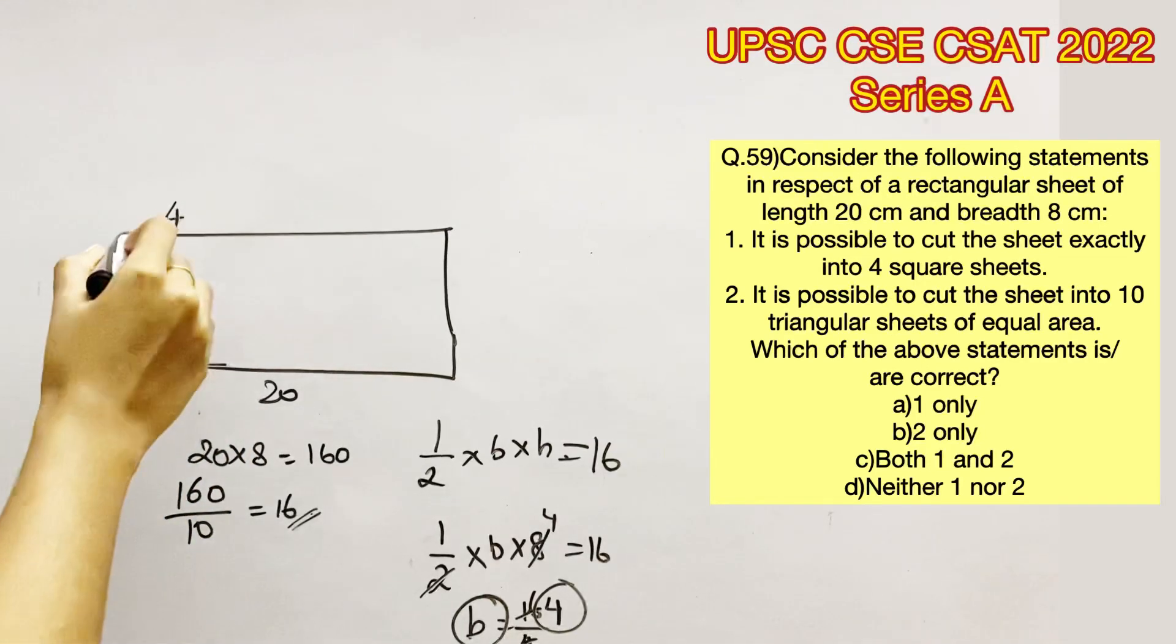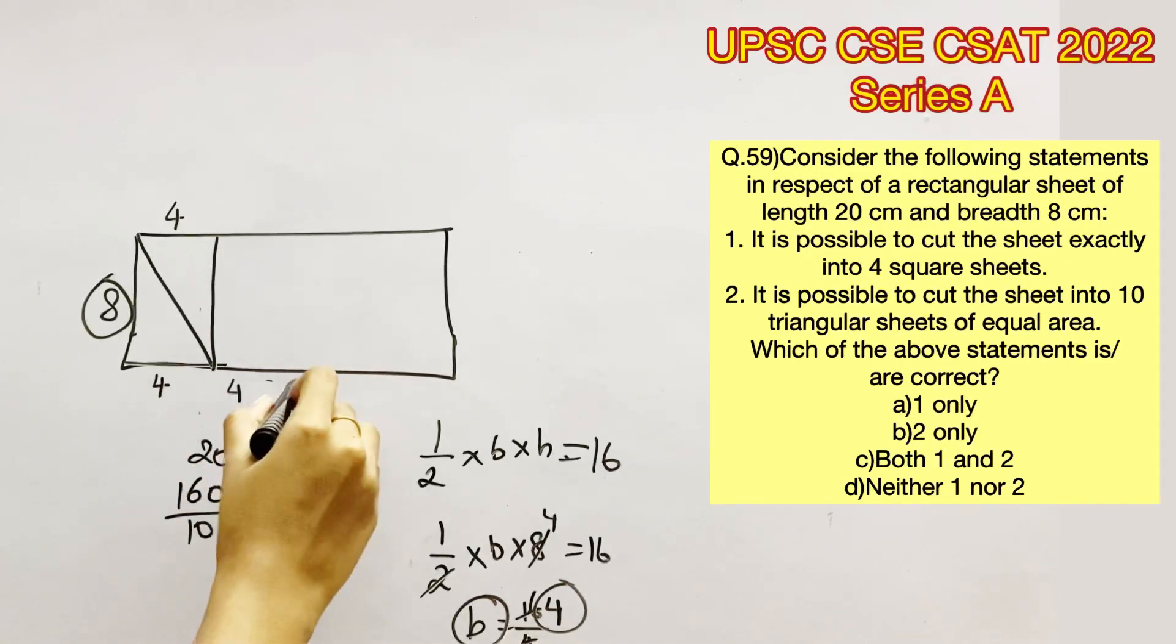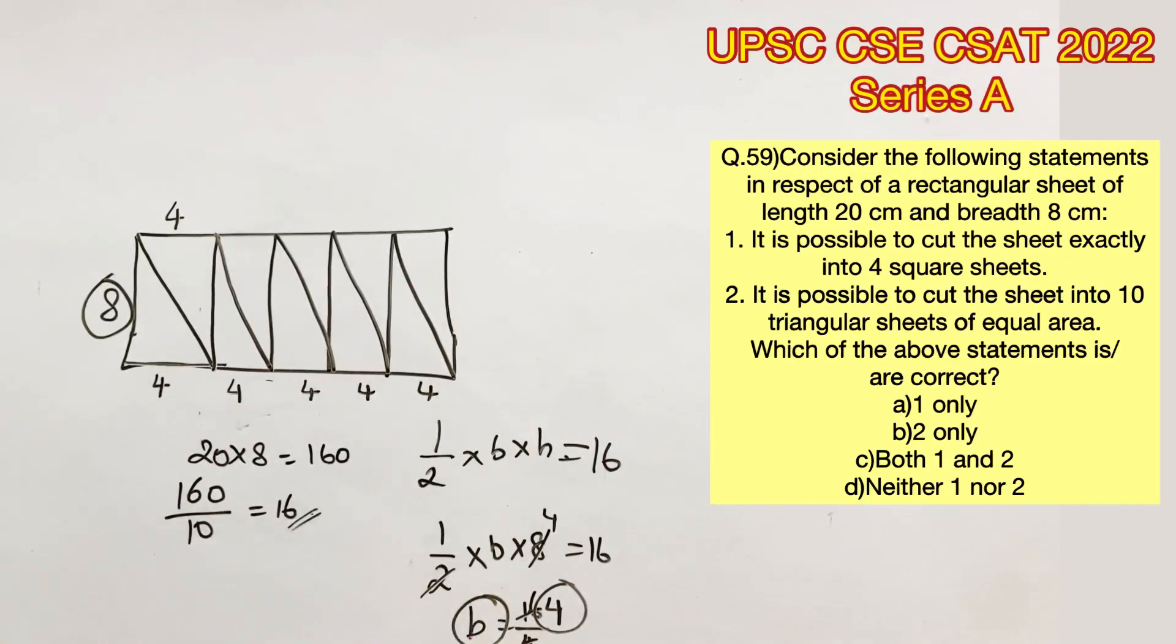Let's cut a right-angled triangle. So this will also be another triangle. Since the length is 20, we can do this 5 more times. Let's count.